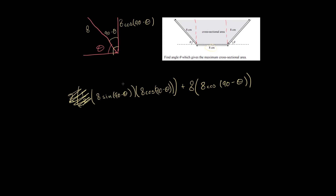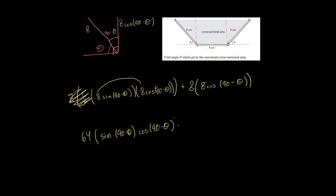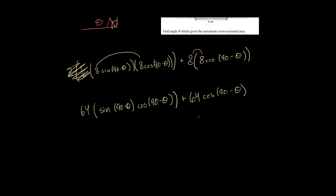I'm going to multiply the two 8's together — that 8 and that 8 — giving me 64 sine(90 minus theta) times cosine(90 minus theta), plus multiplying the other 8's together giving me 64 cosine(90 minus theta). So all of this is equal to the area.